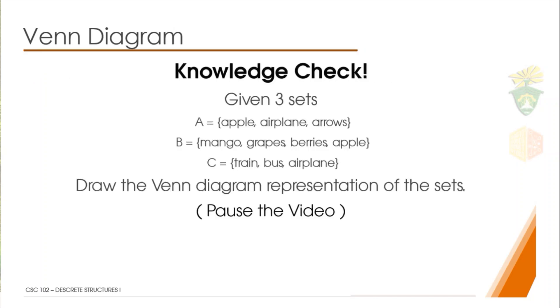Now that you have a prior knowledge of what a Venn diagram is, let's have a knowledge check. Given three sets here, we have set A, B, and C. A contains apple, airplanes, and arrow. I guess this set contains words that start with A.